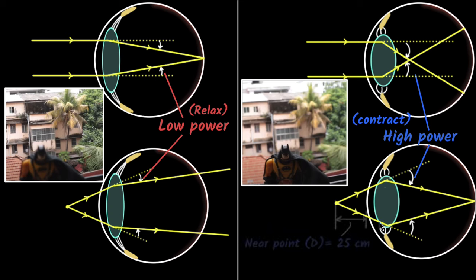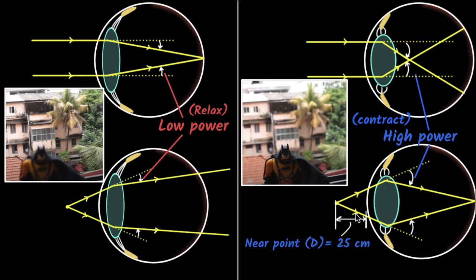For the normal eye, that limit is roughly around 25 centimeters. If you bring the object closer than 25 centimeters, your eyes will get too stressed and will not be able to increase that power too much. The point where your eyes cannot increase the power anymore is called the near point of your eye, represented by D. For human beings, we usually consider the near point to be around 25 centimeters — it varies from person to person. Objects farther than 25 centimeters can still be accommodated, but closer than 25 centimeters, your eyes will not be able to accommodate. That's basically what accommodation is — the ability to change the power depending upon how far or how close the objects are.